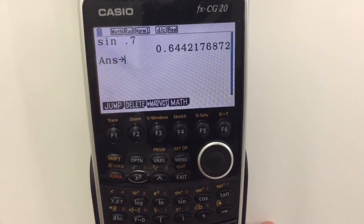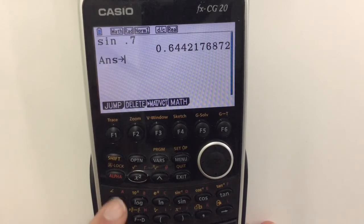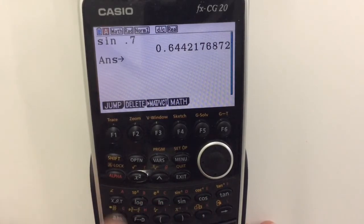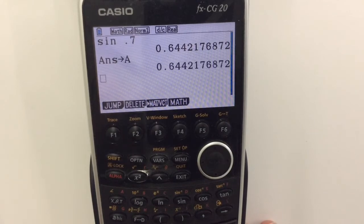it will store the previous answer into somewhere that you want. Now if you look above most the keys you'll see little red letters. Pressing alpha and that key will give you A, so it has now stored that value into A.